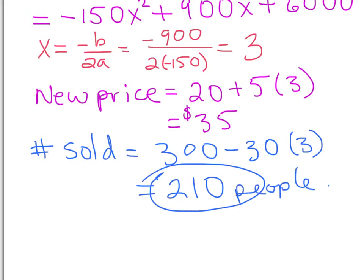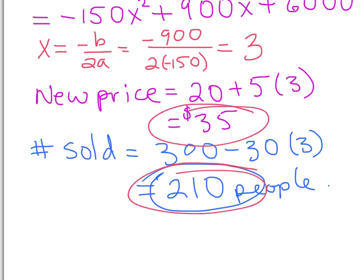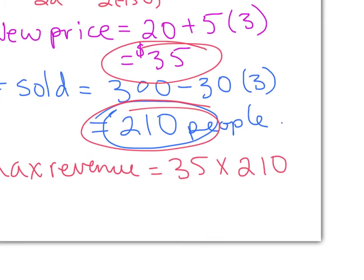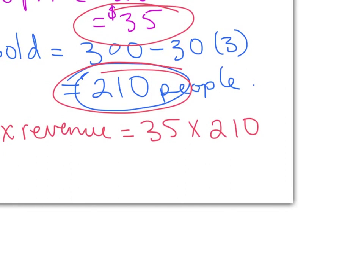To find the maximum revenue we multiply the price by the number of items sold: 35 times 210 gives us a maximum revenue of seven thousand three hundred fifty dollars.